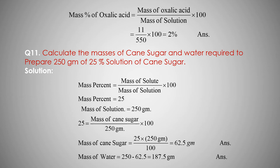So mass of cane sugar equals 25 into 250 upon 100, which equals 62.5 grams. Mass of cane sugar is 62.5 grams. Water means solvent. Total solution is 250 grams, so mass of water equals mass of solution minus mass of cane sugar, which is 250 minus 62.5 equals 187.5 grams.